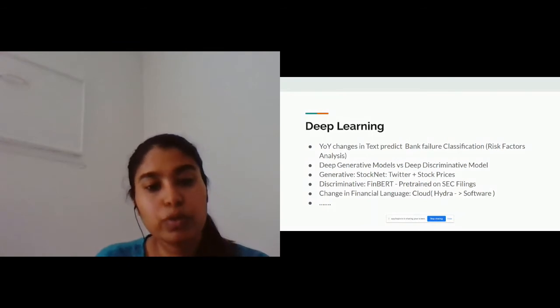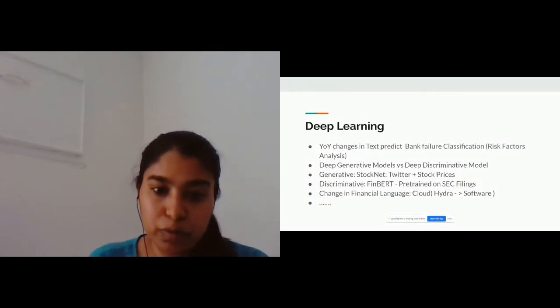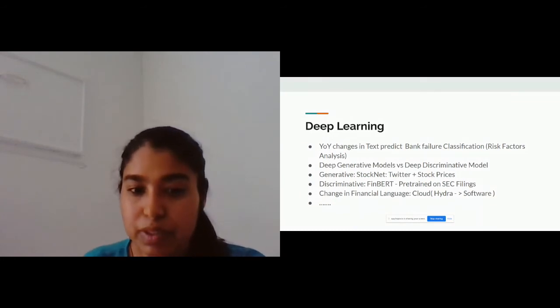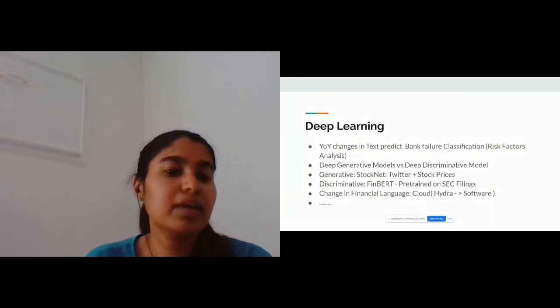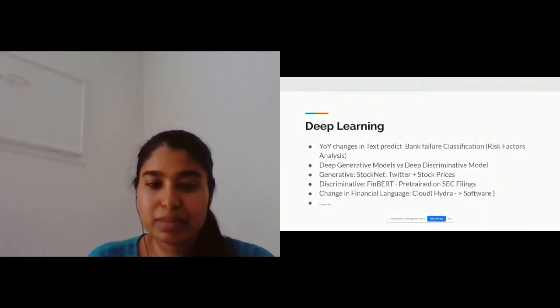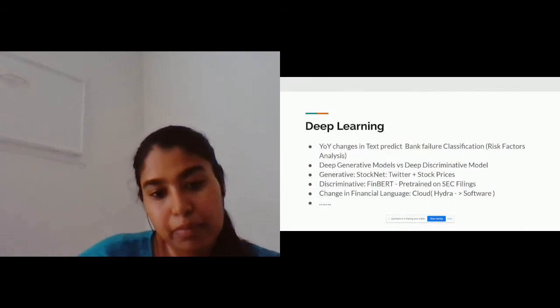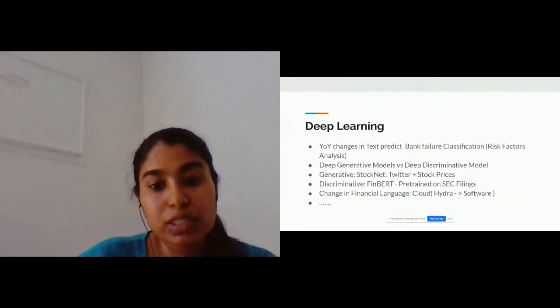Also on the discriminative side, BERT disrupted the whole landscape. I am hoping that most of the people who are enthusiastic about NLP must be aware about BERT. This is a model which has been published by Google in 2019, and since then it is everywhere. It is used in every NLP task possible. Why has it been used? Because it is generalizable. You can train it once and use it for various different tasks.